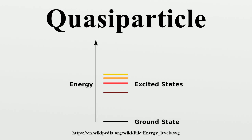One simplifying factor is that the system as a whole, like any quantum system, has a ground state and various excited states with higher and higher energy above the ground state. In many contexts, only the low-lying excited states with energy reasonably close to the ground state are relevant. This occurs because of the Boltzmann distribution, which implies that very high energy thermal fluctuations are unlikely to occur at any given temperature. Quasi-particles and collective excitations are a type of low-lying excited state. For example, a crystal at absolute zero is in the ground state, but if one phonon is added, the crystal is in a low-lying excited state. That single phonon is called an elementary excitation.